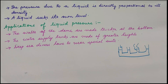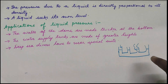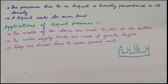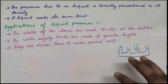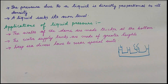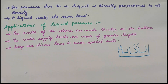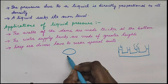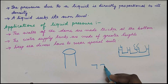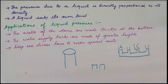Liquid pressure is seen in everyday life in various ways. The walls of dams are made thicker at the base because the pressure at the bottom is greater — to withstand the large lateral pressure, the dam walls at the base are very thick. Also, water supply tanks are placed at greater heights so that the increased height of the water level increases the pressure, allowing water to flow down to houses with good pressure.